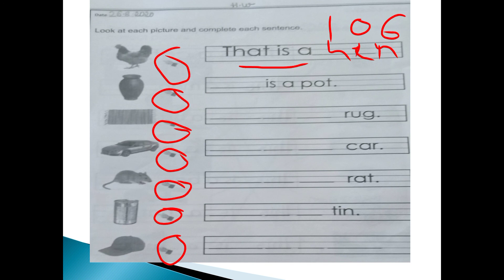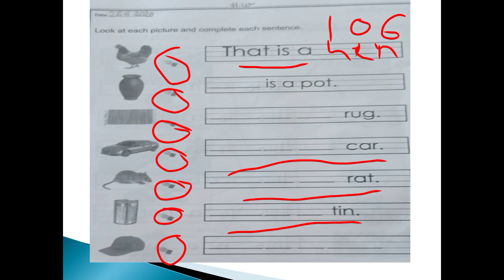Next: 'that is a car', 'that is a rat', 'that is a tin'. Last, write the full sentence: 'that is a cap'. And then at the end, put a full stop. I hope all of you are understanding very well.